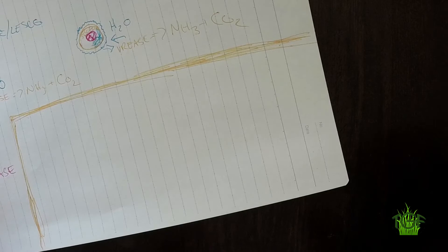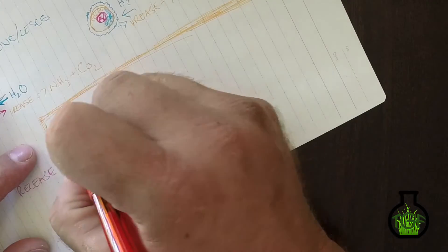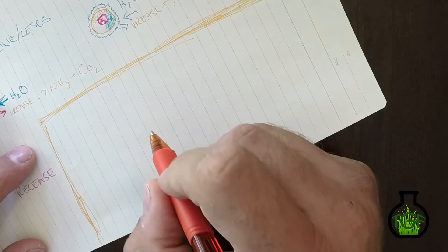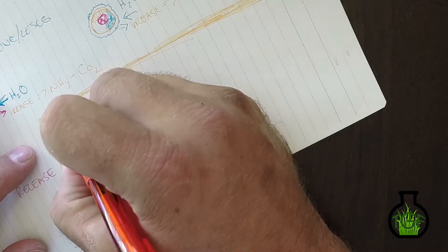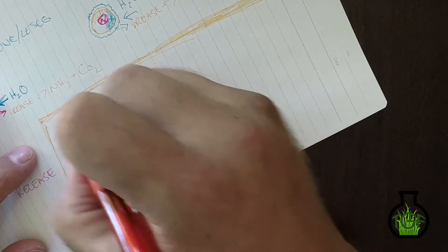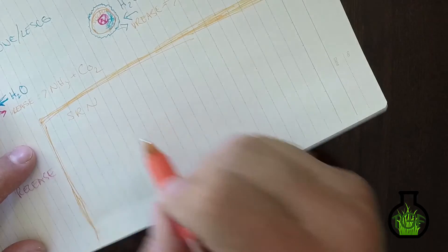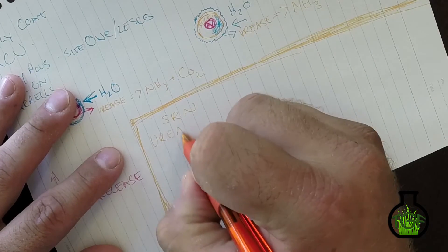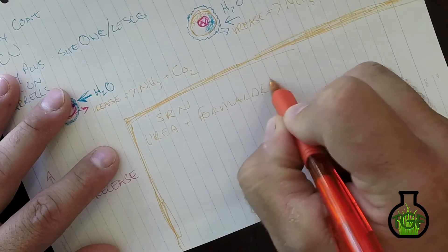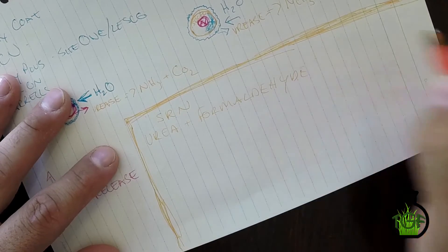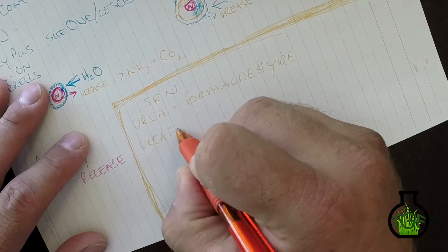Okay, so we also have liquid slow-release nitrogen, or SRN. These are usually a reaction of urea with formaldehyde, and there are three different forms: urea form, which is kind of the old-school slow release nitrogen, methylene urea, and triazone.